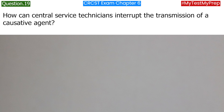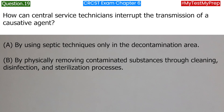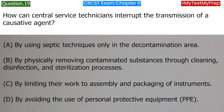How can central service technicians interrupt the transmission of a causative agent? A. By using aseptic techniques only in the decontamination area. B. By physically removing contaminated substances through cleaning, disinfection, and sterilization processes. C. By limiting their work to assembly and packaging of instruments. D. By avoiding the use of personal protective equipment (PPE). Answer: B. By physically removing contaminated substances through cleaning, disinfection, and sterilization processes.